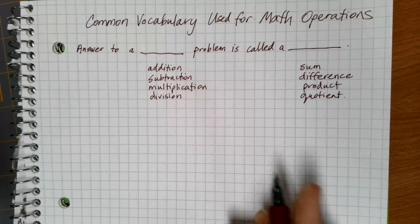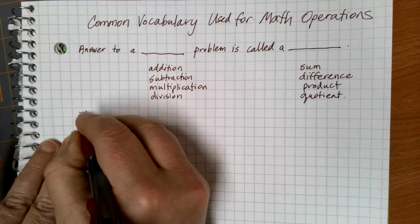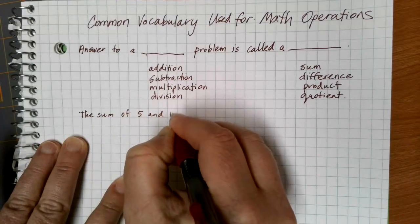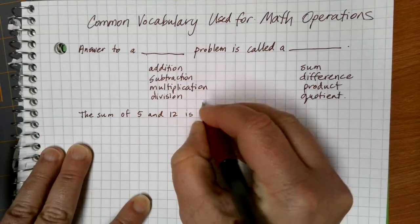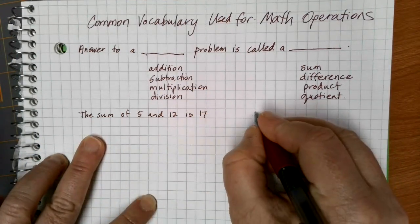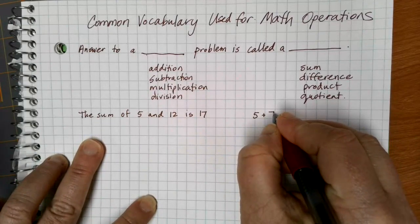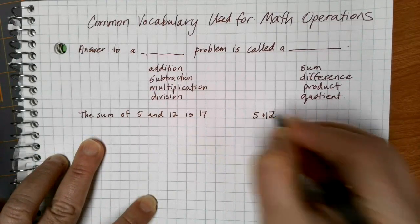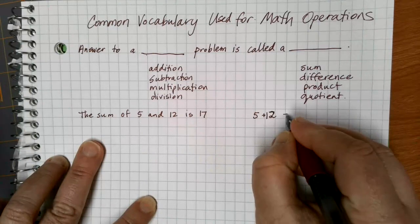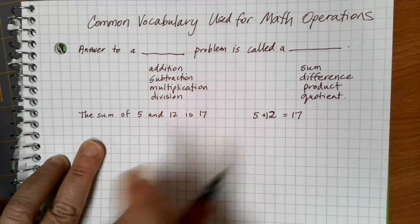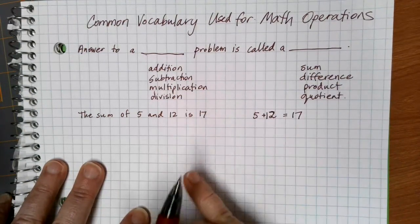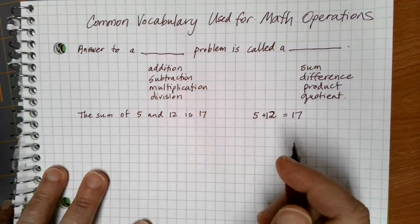For example, the sum of 5 and 12 is 17, because the sum of 5 and 12 means we're doing 5 plus 12. We're doing an addition, getting an answer, and the answer we get is 17. We can use these specific terminologies to indicate a particular type of problem going forward.